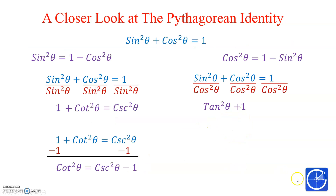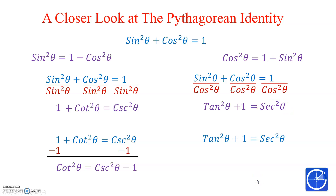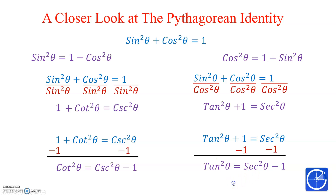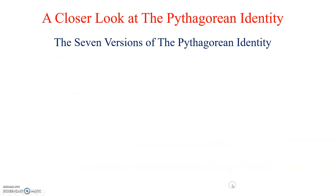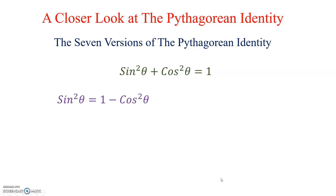We've got Cosecant squared isolated. We can then isolate Cotangent by subtracting 1 on both sides: Cotangent squared equals Cosecant squared Theta minus 1. Now we do the exact same thing starting from the original identity, but this time divide everything by Cosine squared. Sine squared Theta over Cosine squared Theta — since Sine over Cosine is Tangent — simplifies to Tangent squared Theta. Cosine squared over Cosine squared is 1. And 1 over Cosine is Secant, so this gives us Secant squared.